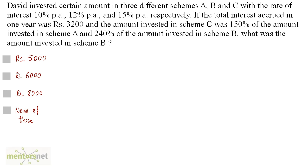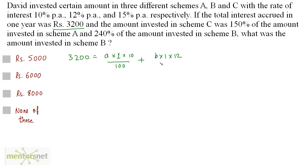The total interest accrued in one year was 3,200. That means if I add all the interest I get 3,200. So 3,200 equals the interest from scheme A, that is PNR upon 100. Let the amount invested in scheme A, B, and C be A, B, and C. So P is A, N is one year, rate is 10 upon 100, plus interest from scheme B: B times 1 times 12 upon 100, plus from scheme C at 15%.